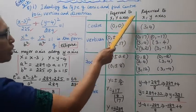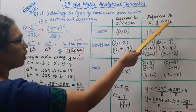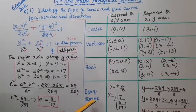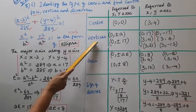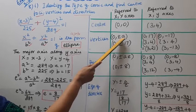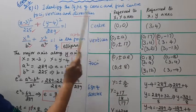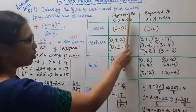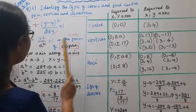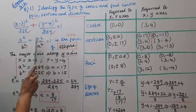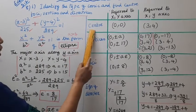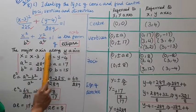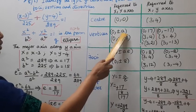Here is the table for referred to capital X, Y axes. This is for x²/b² + y²/a² = 1. Center is 0,0. Vertices, major axis along Y axis: 0, ±a. Since a = 17: 0, ±17.